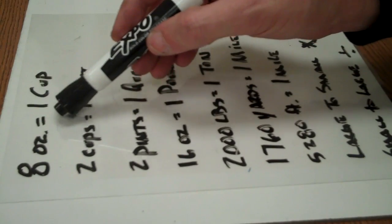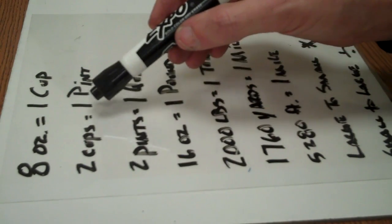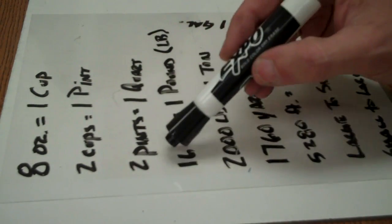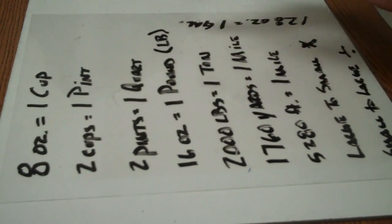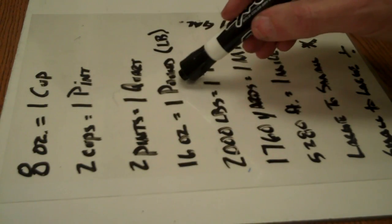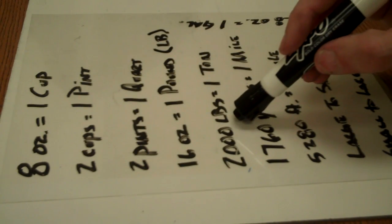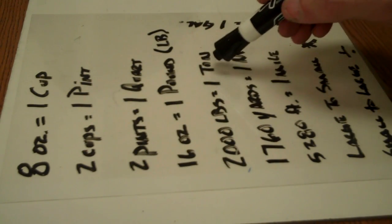So, there's 8 ounces in a cup, 2 cups in a pint, 2 pints in a quart, 16 ounces in 1 pound, 2,000 pounds equals 1 ton.